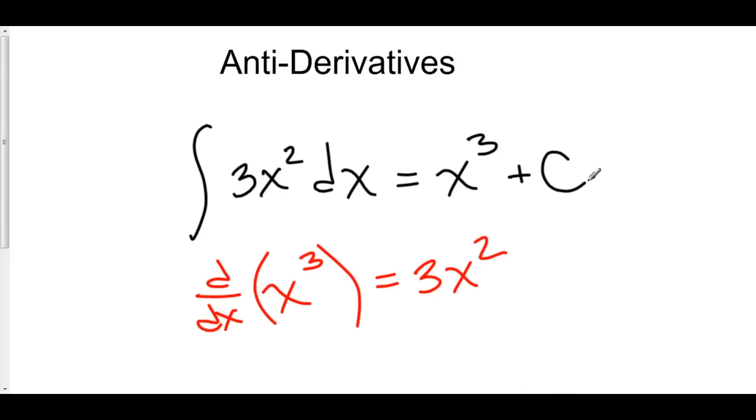That family is x cubed plus capital C. This C notes that we can add any constant to x cubed, be it negative 5, negative E, pi, 3.892657. C can be anything. It could be 0. Who knows? Because the derivative of a constant is 0.